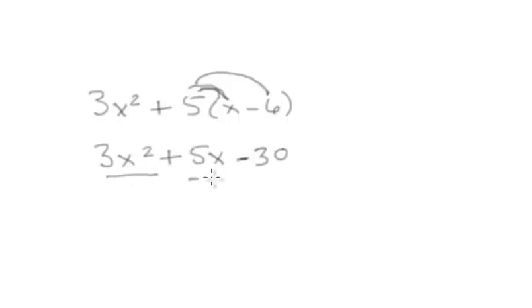Okay so now do we have any like terms? 3x squared and 5x? Those are not like, so you have to leave them separate. So that's going to be as simple as you're going to get: 3x squared plus 5x minus 30.